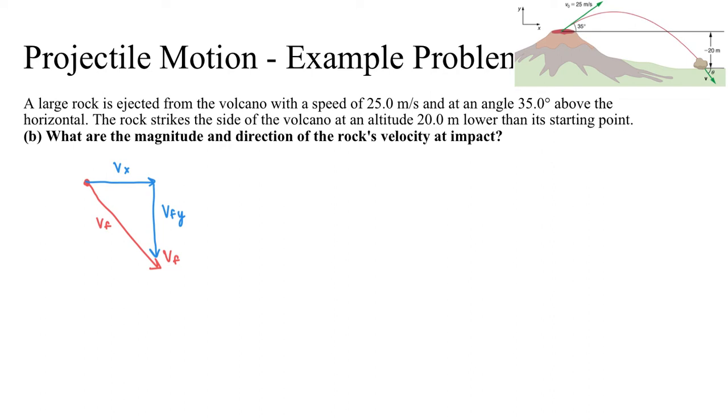So in order to solve for the magnitude and direction of v_f, essentially what we're being asked to do is solve for the resultant vector of these two components. So I already know my v_x. My v_x is the same thing as it was at the beginning. It's always the same, and that's going to be 25 cosine 35 degrees. So I'm already halfway there.